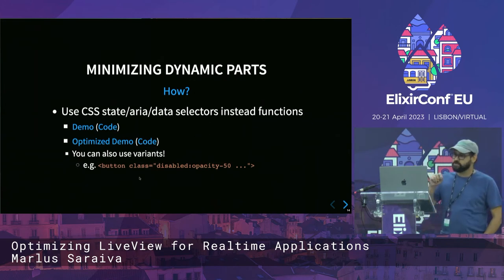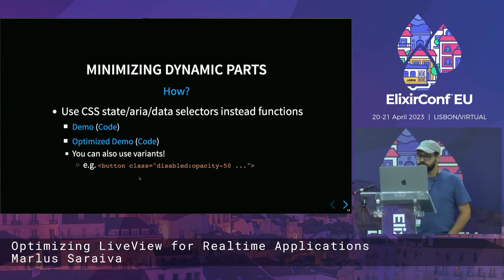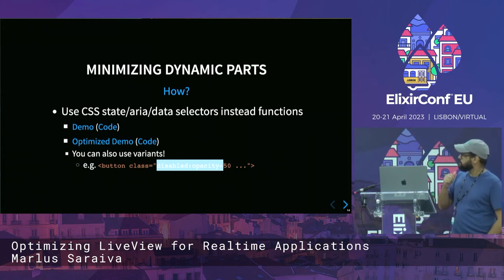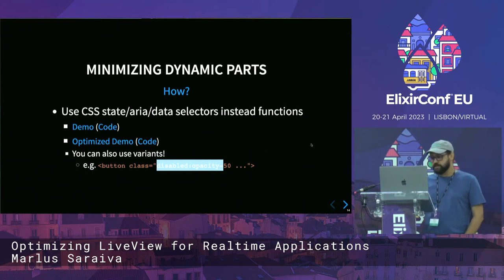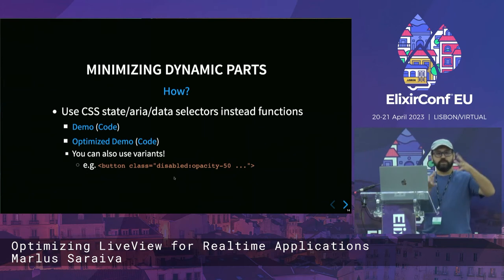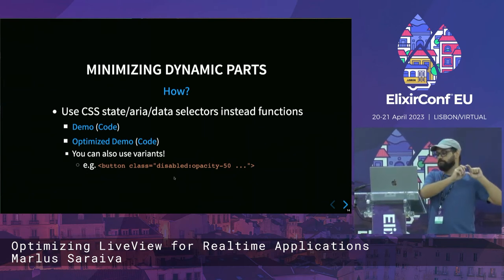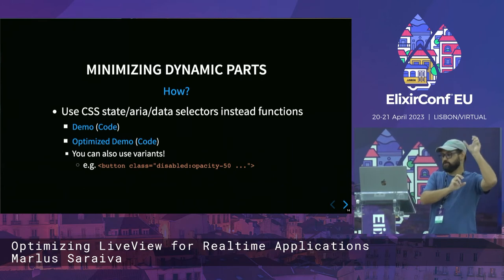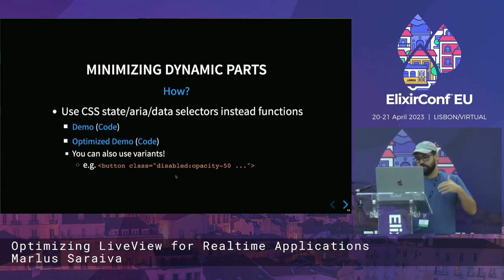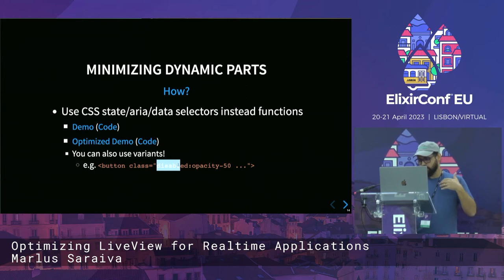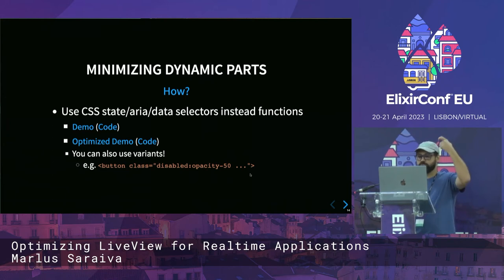If you're using Tailwind, you can also use the disabled variant. The first strategy is not limited to Tailwind — you can use whatever CSS technology you want. But if you're using Tailwind, you can also use the variant: instead of creating a custom class and using a CSS state selector, you can directly use the variant inline. Then it's going to be all static, conditional on the value of the disabled attribute.